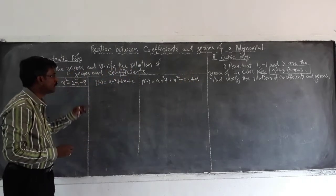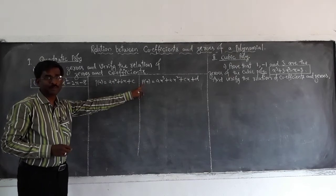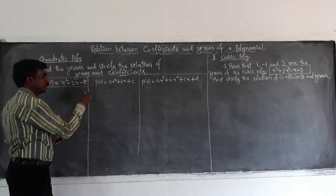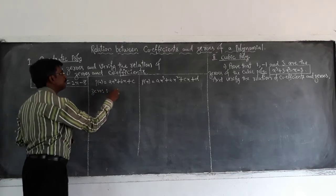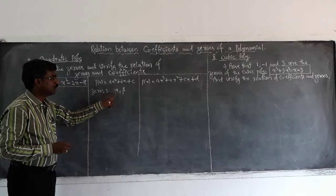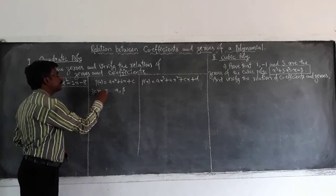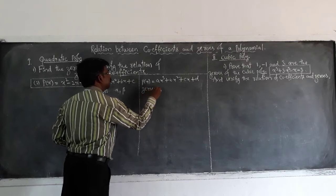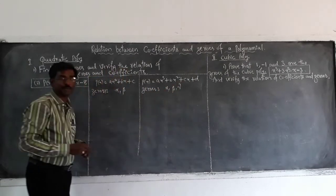So here this is a quadratic polynomial and this is a cubic polynomial. So here consider the zeros. Let them alpha and beta. Because of degree two there should be two zeros. And here zeros, let them alpha, beta and gamma.